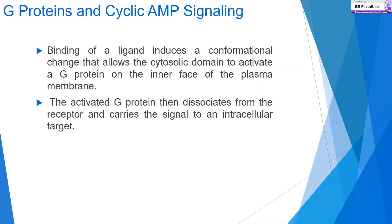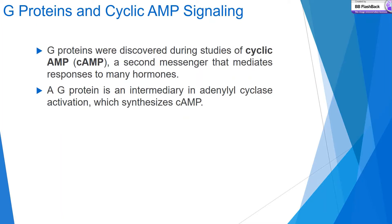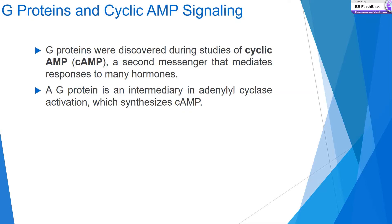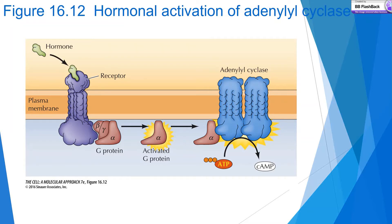The activated G-protein dissociates from the receptor and transmits the signal to an intracellular target. G-proteins were discovered during studies of cyclic AMP — a second messenger that mediates responses to many hormones. G-protein is an intermediary in adenylyl cyclase activation, which synthesizes cAMP. When a hormone acts as a ligand and binds to the receptor, the G-protein's alpha subunit is activated, binds to adenylyl cyclase, and produces cAMP in the presence of ATP.